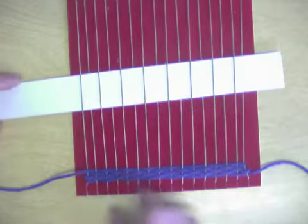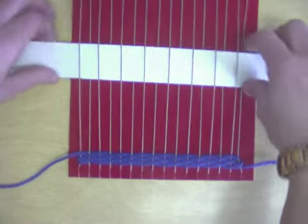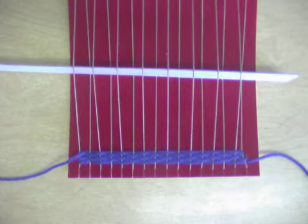Again, once I finished, double check: is it opposite of the last row? If it is, I turn my stick on its side.